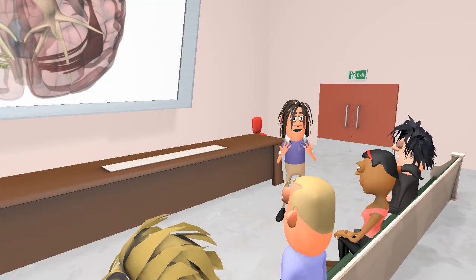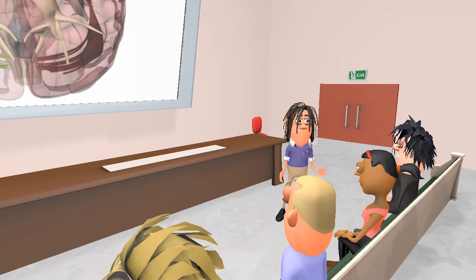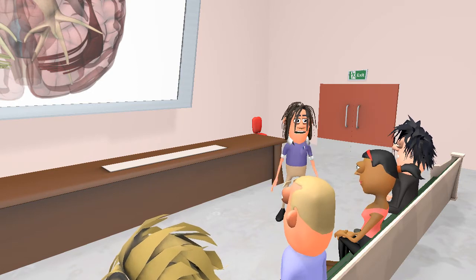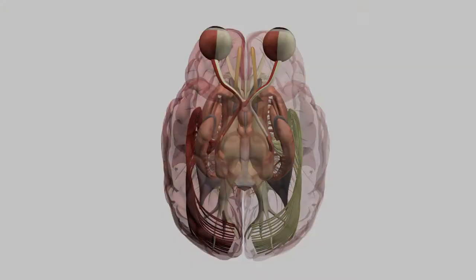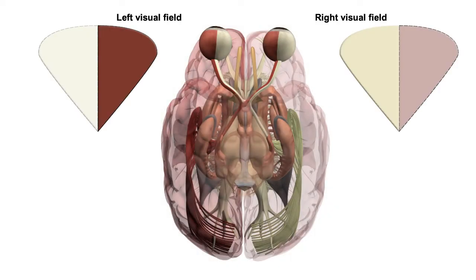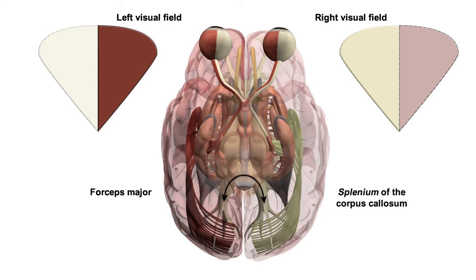Thus, like each part of the auditory pathway receiving a mix of inputs from both ears, each region of the visual cortex receives information from both eyes, but only from half the visual field. Inputs from the left and right visual fields are combined via the commissural connection between the occipital lobes, namely the forceps major, that forms the splenium of the corpus callosum.